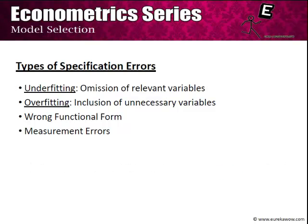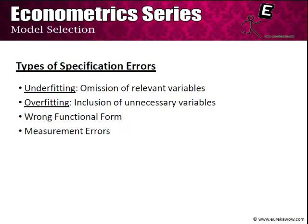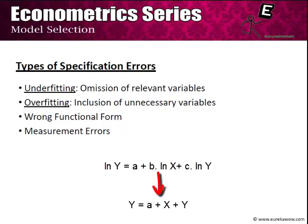Similarly, there is an error of overfitting — that is, inclusion of unnecessary variables. For example, while talking about the evolution of debt in eurozone countries, if you include the GDP growth rate of Namibia, that is taking it too far — inclusion of unnecessary variables, which is called overfitting. Thirdly, it is important to take the correct functional form of the model. For example, if it is a log-linear model in reality whereas we run a linear model, we would be committing this kind of specification error. The fourth type is measurement error, which we will not deal with explicitly in this module.